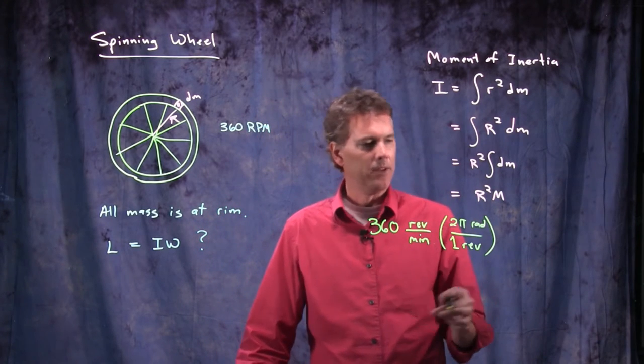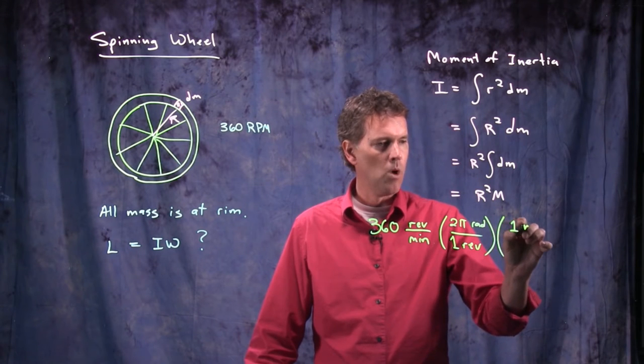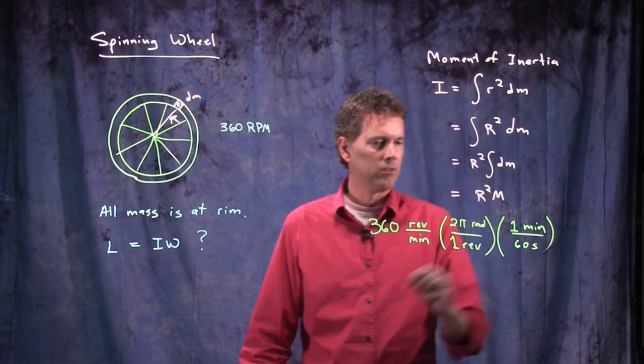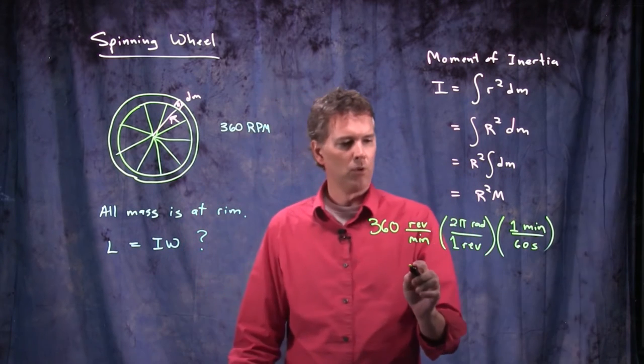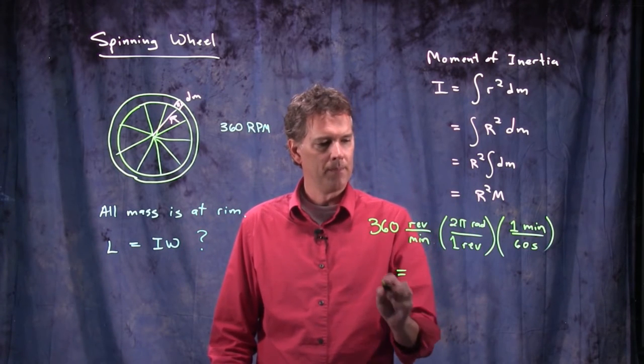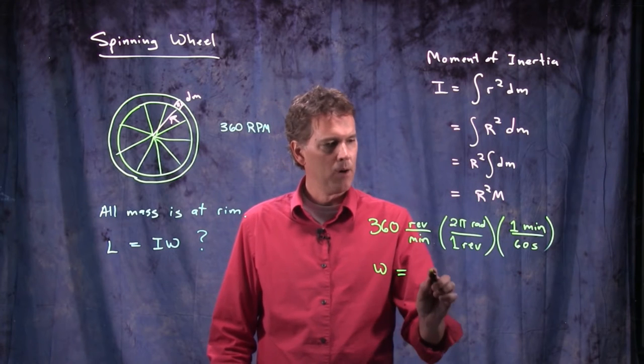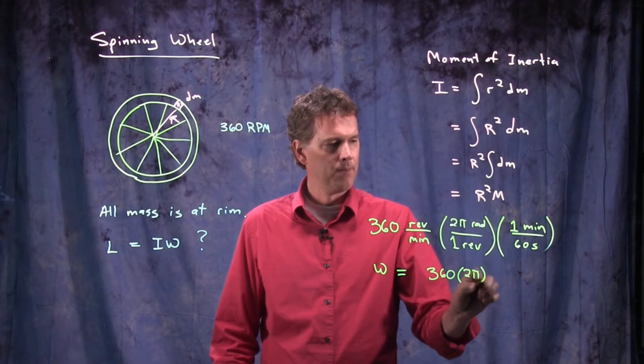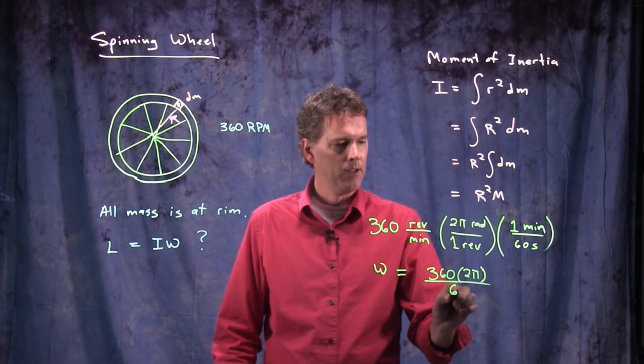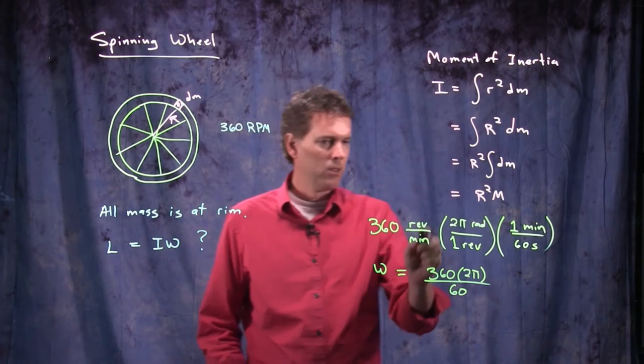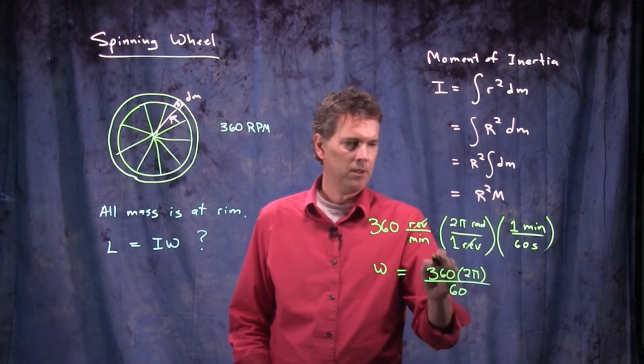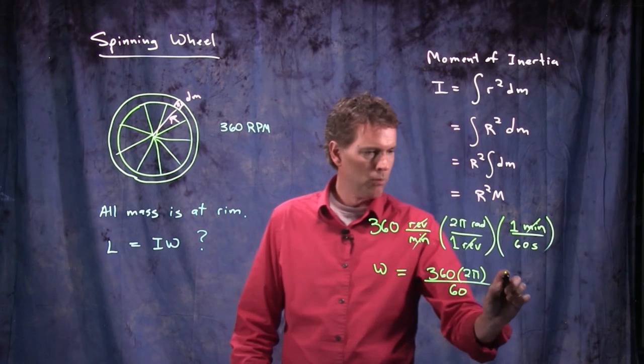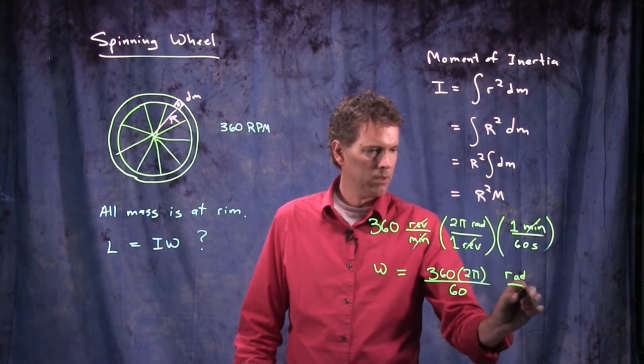So now we're going to get rid of revolutions and we'll convert to radians. We've got to get minutes into seconds, but we know how to do that. One minute is 60 seconds. And so this whole thing becomes what? Omega is now 360 times 2 pi divided by 60. The revolutions canceled out. And we ended up with radians per second.